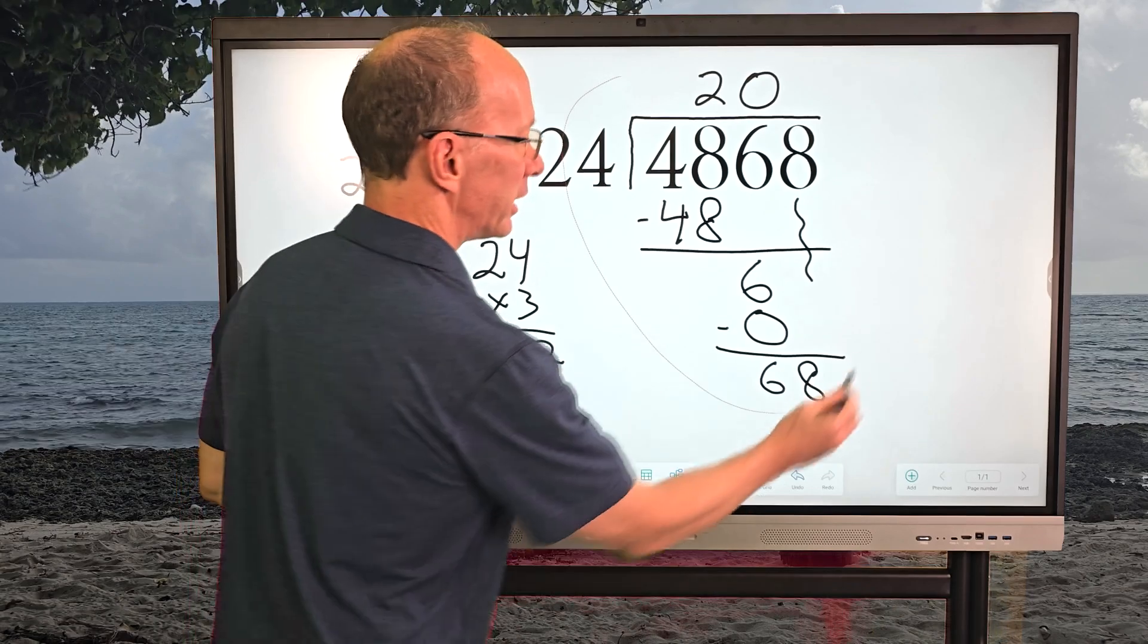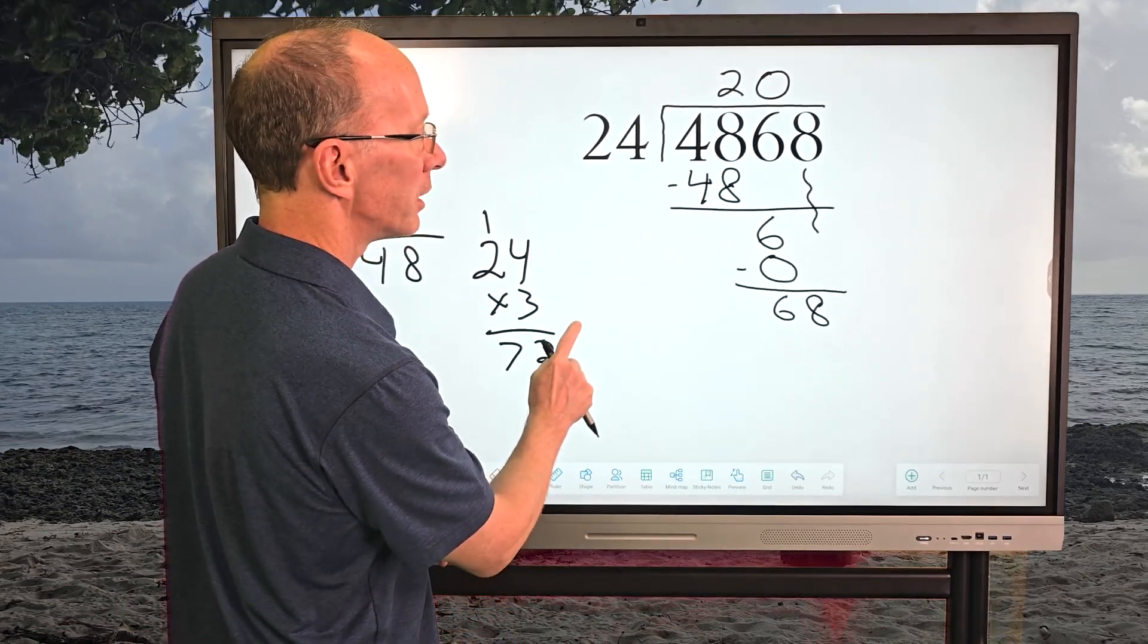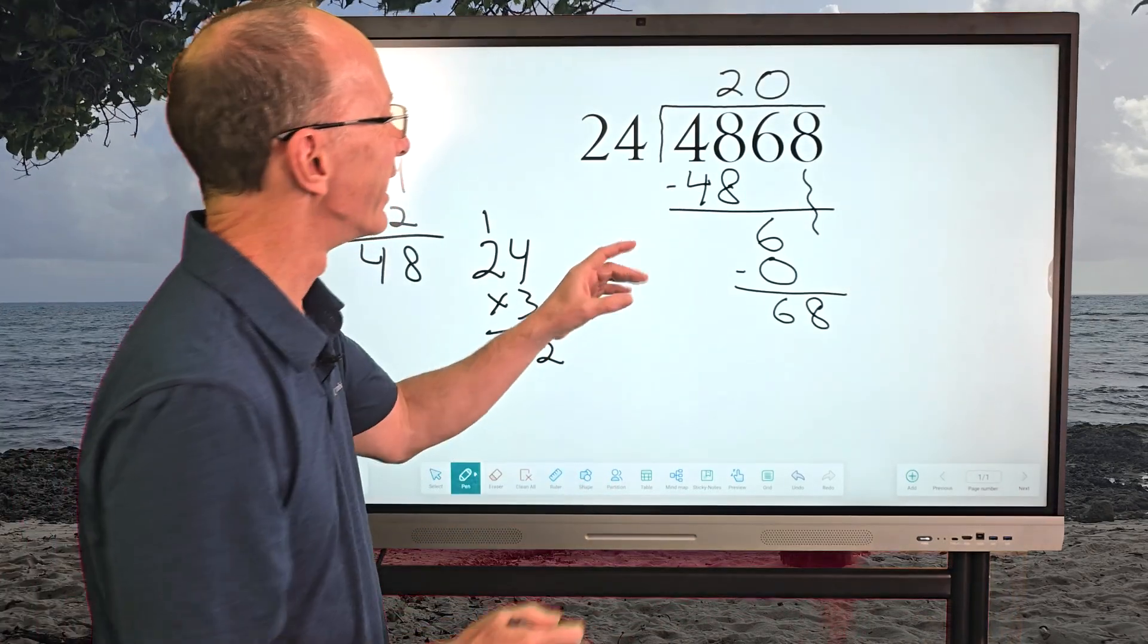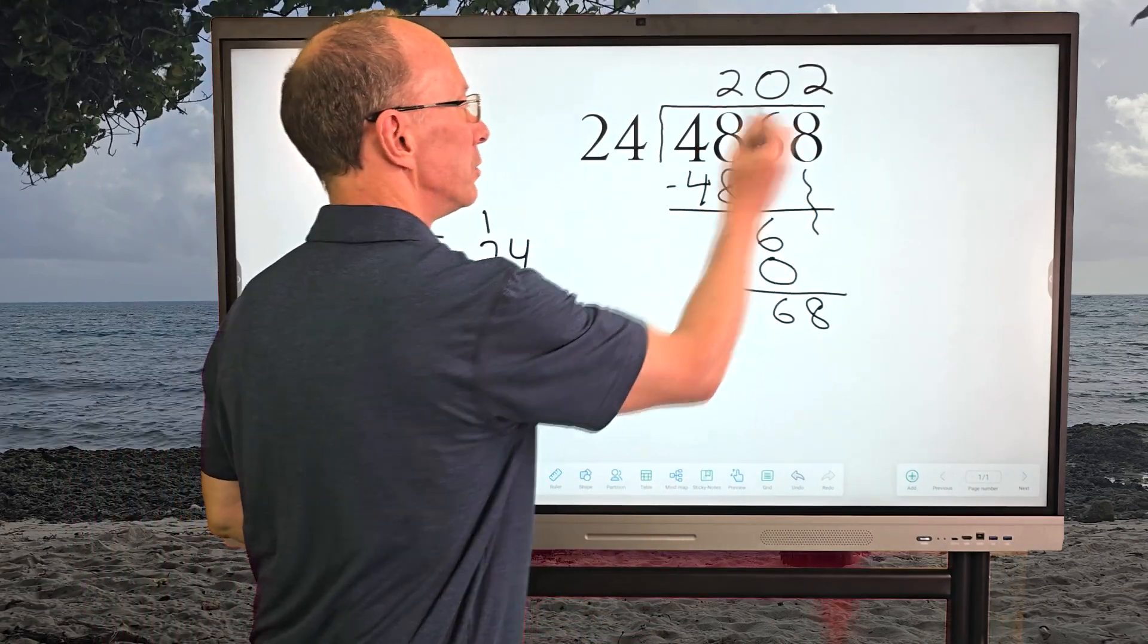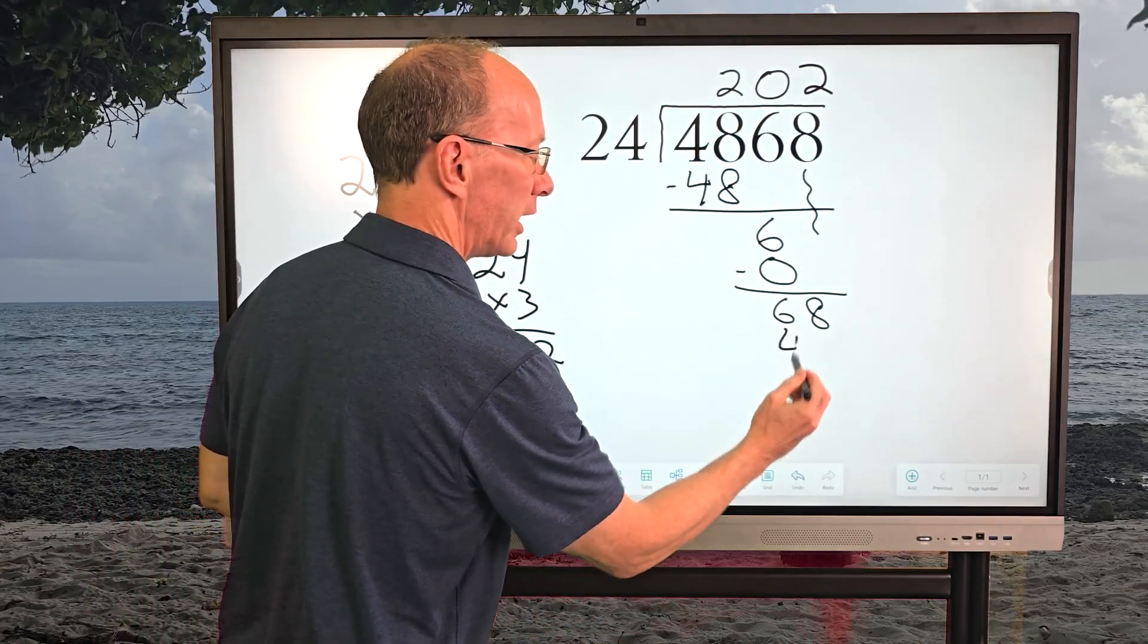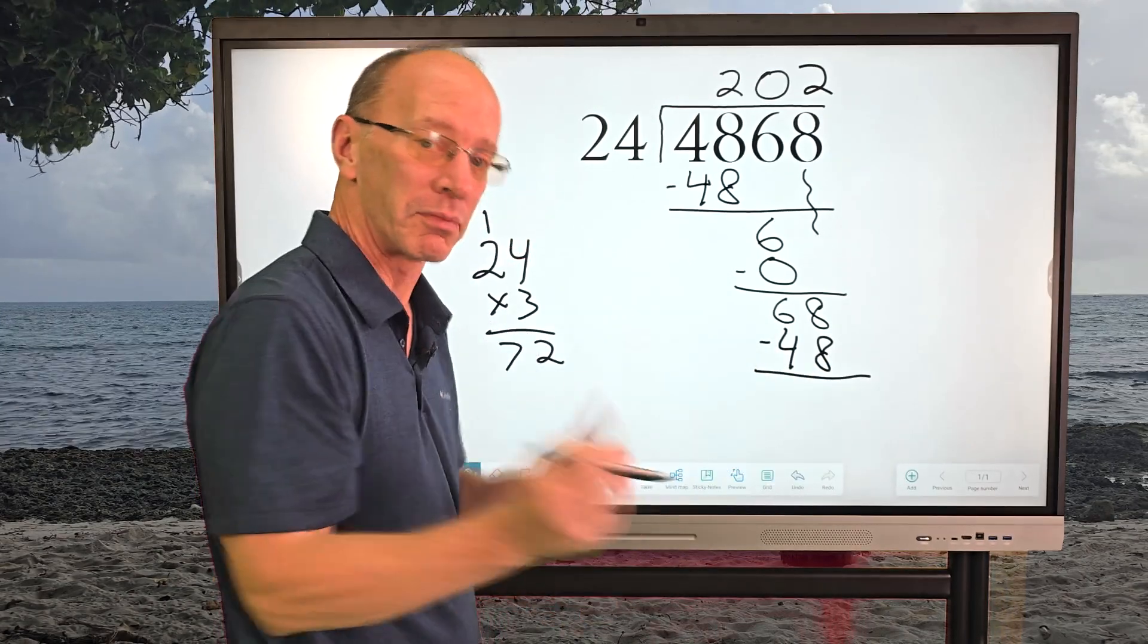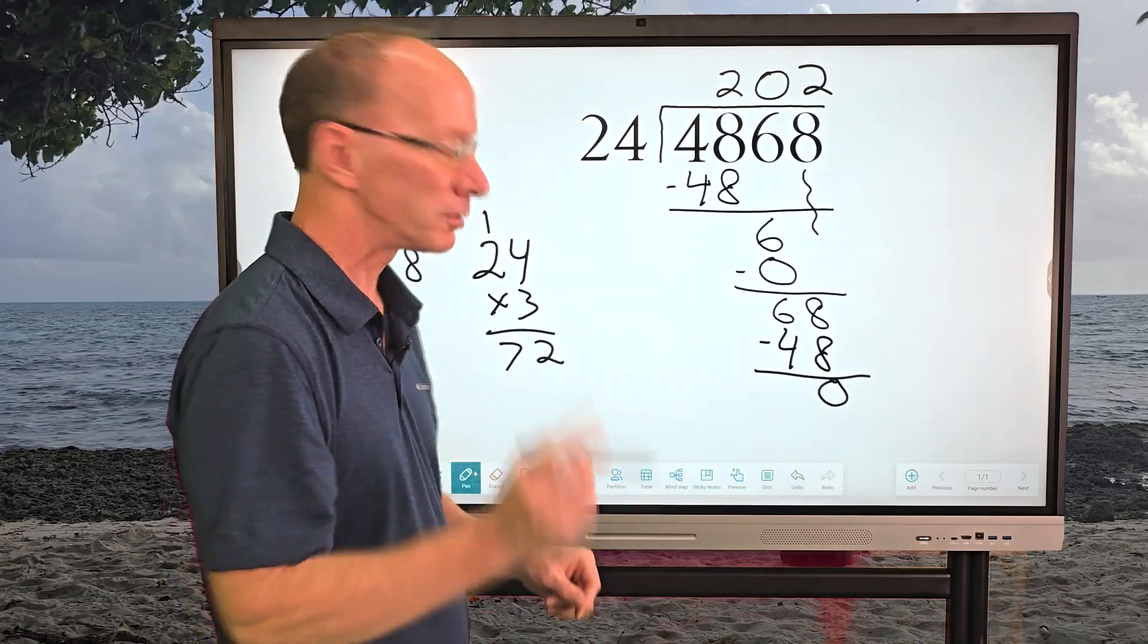So the nice thing about using a smartboard is that I can shorten this a little bit. All right, this is so cool, isn't it? All right. Let's go ahead and put 2 right here. So 2 times 24 is 48. And then I go ahead and subtract. 8 minus 8, 0. And then 6 minus 4, 2.